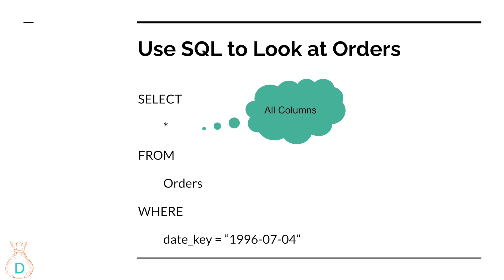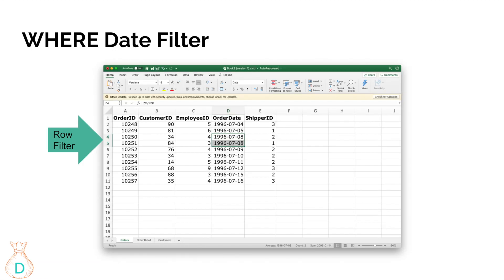SELECT * will get you all the columns from the orders table. The WHERE clause works like a row filter — similar to when you hit the filter button in Excel and filter down to a specific date. Here I filtered down to July 4th, 1996. The data set has columns like order ID, customer ID, employee ID, and shipper ID.